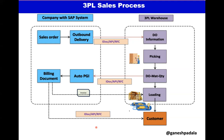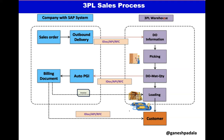Looking at the overall architecture: on the left-hand side is the main company where the plant, location, and everything is available — they are using an SAP system. The 3PL warehouse is using a third-party warehouse system. The company is using SAP MM, SD, and FI — they're not using warehouse management — but they've given their warehouse operations to a 3PL, a third-party system, which handles put-away, storage, bin stock, and everything.